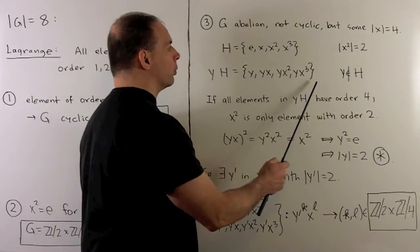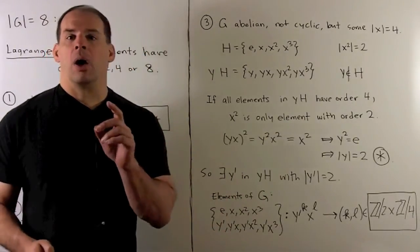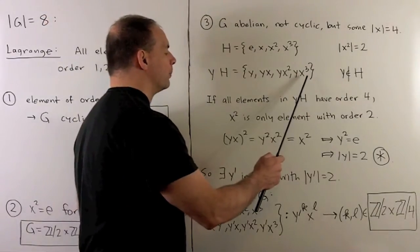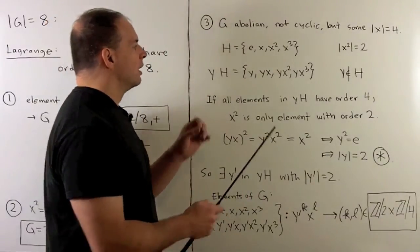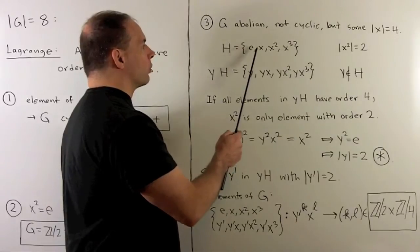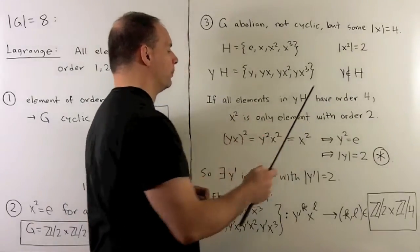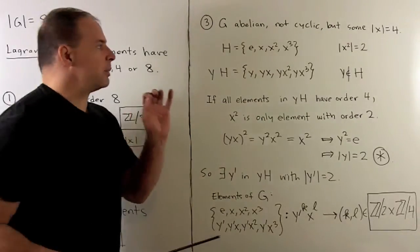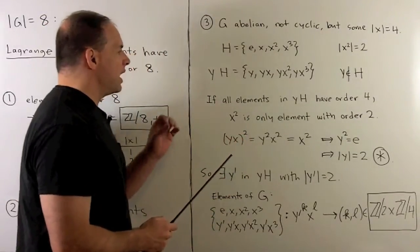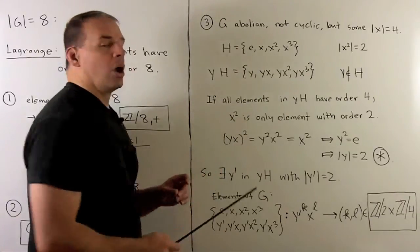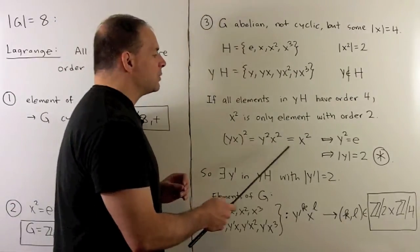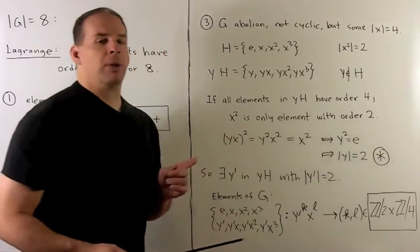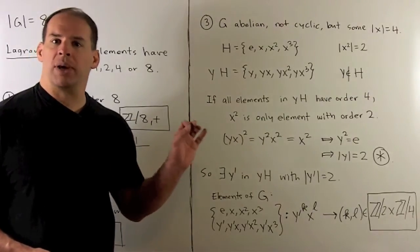Now I want to show there's an element of order 2 in the coset yH. Assume all elements in yH have order 4. Then we have a unique element of order 2, namely x squared. If I take any element of order 4 and square it, we get x squared. So take yx, which has order 4, square it — our group is abelian — so we get y squared x squared, which must equal x squared. Canceling gives y squared equal to the identity, contradicting that y has order 4.